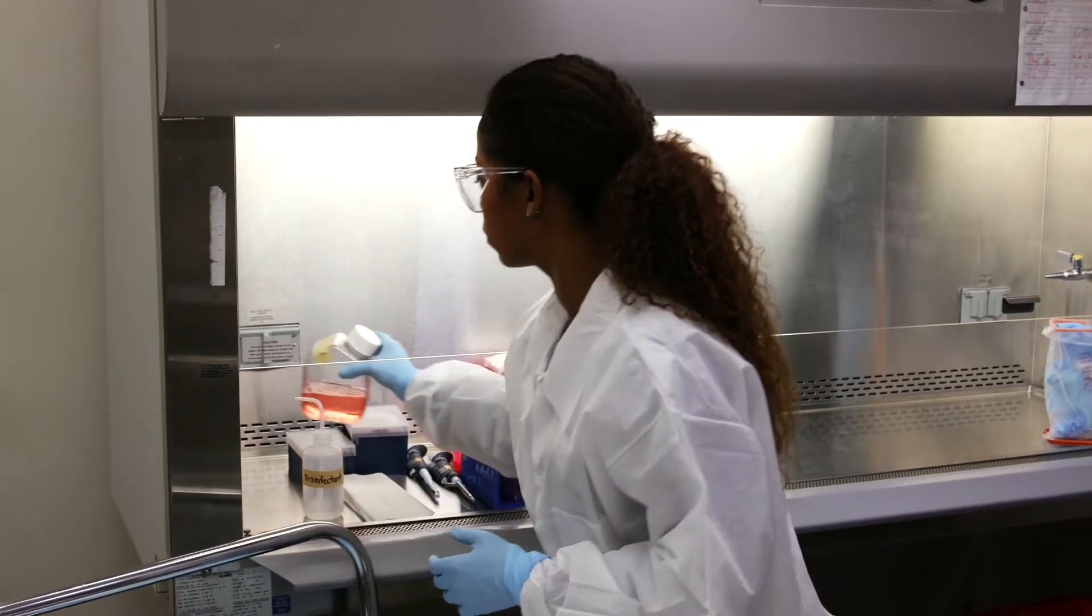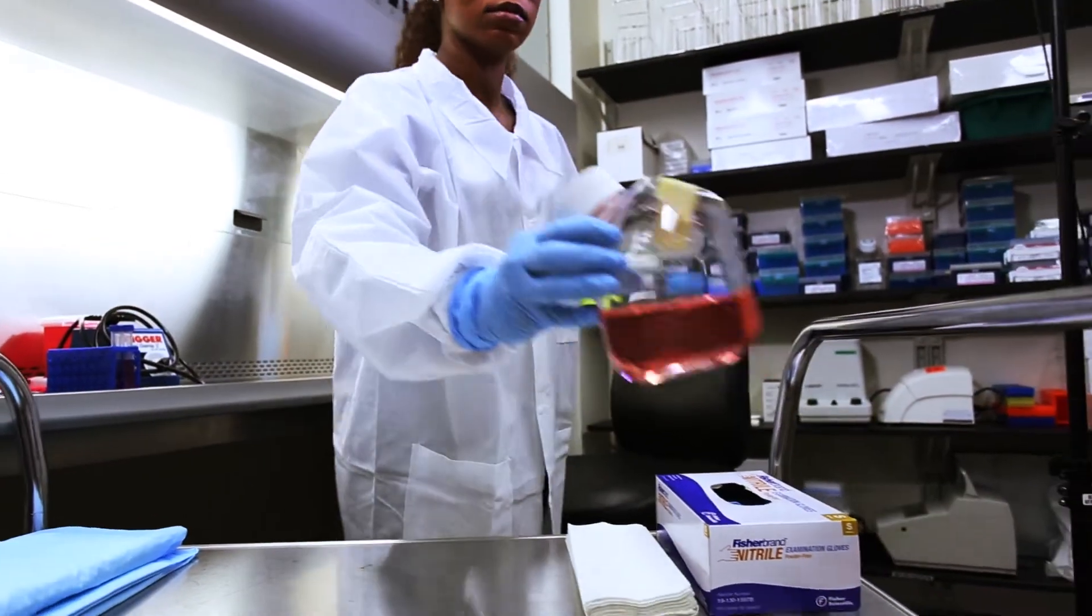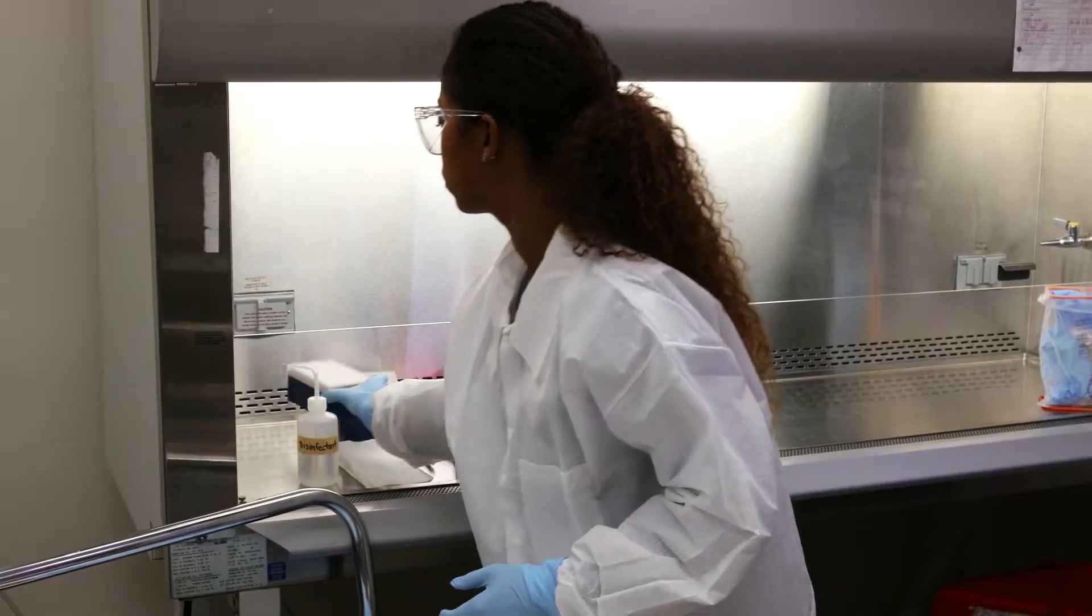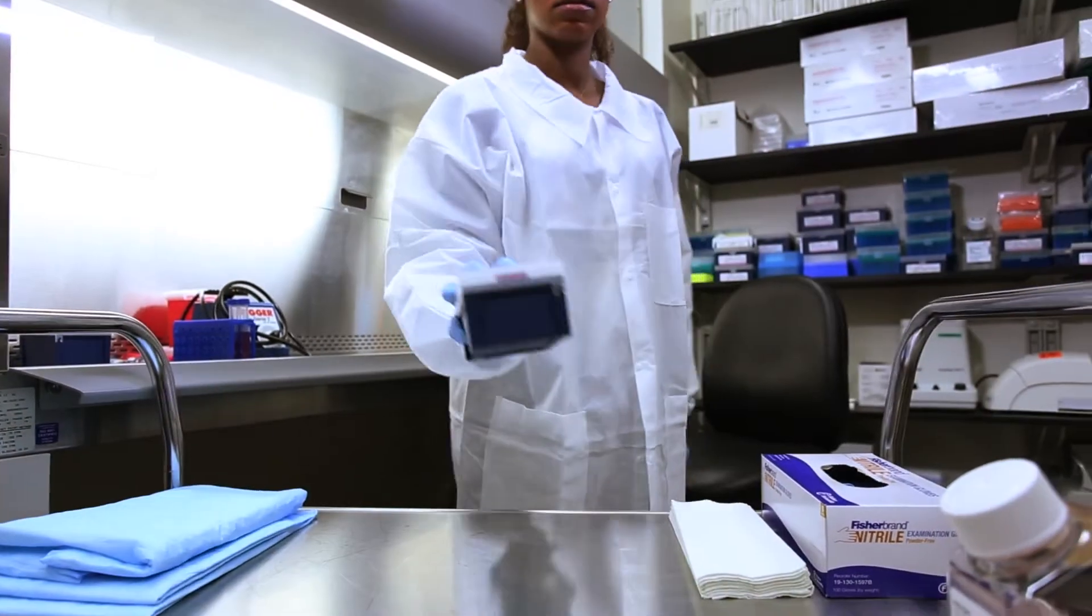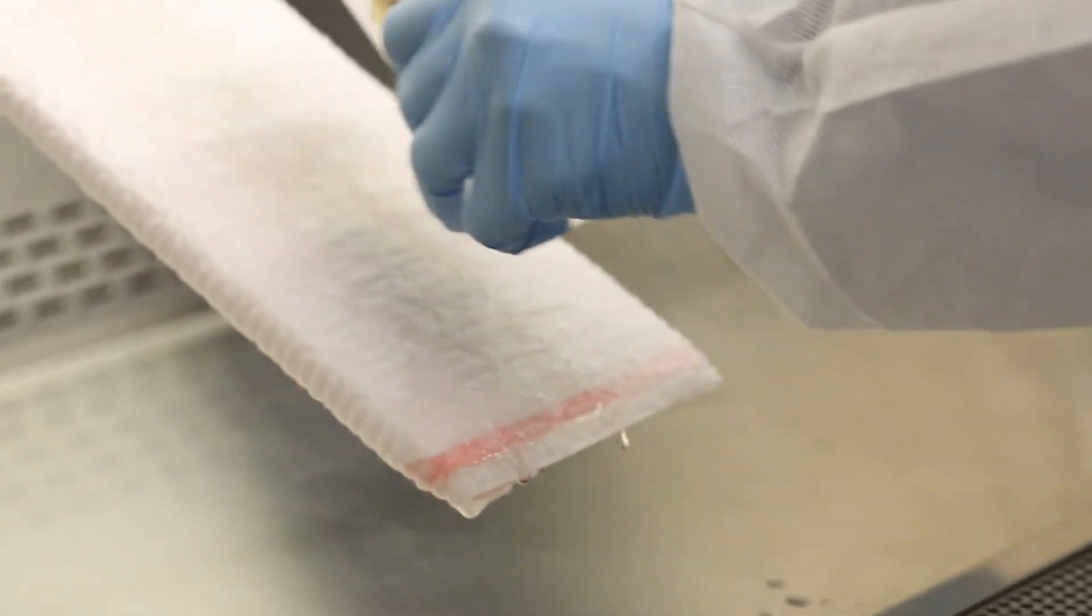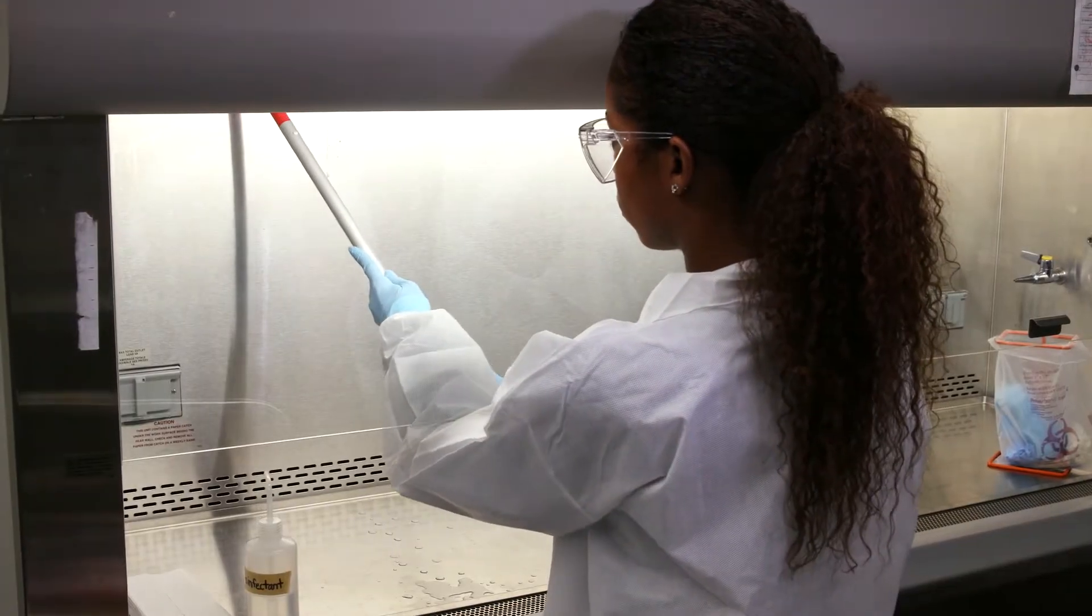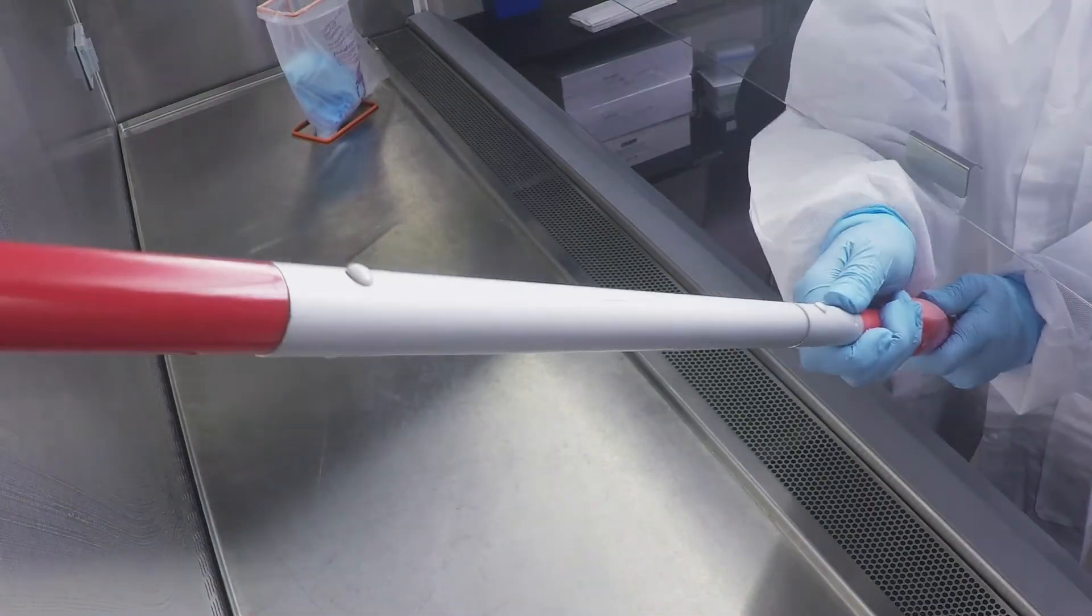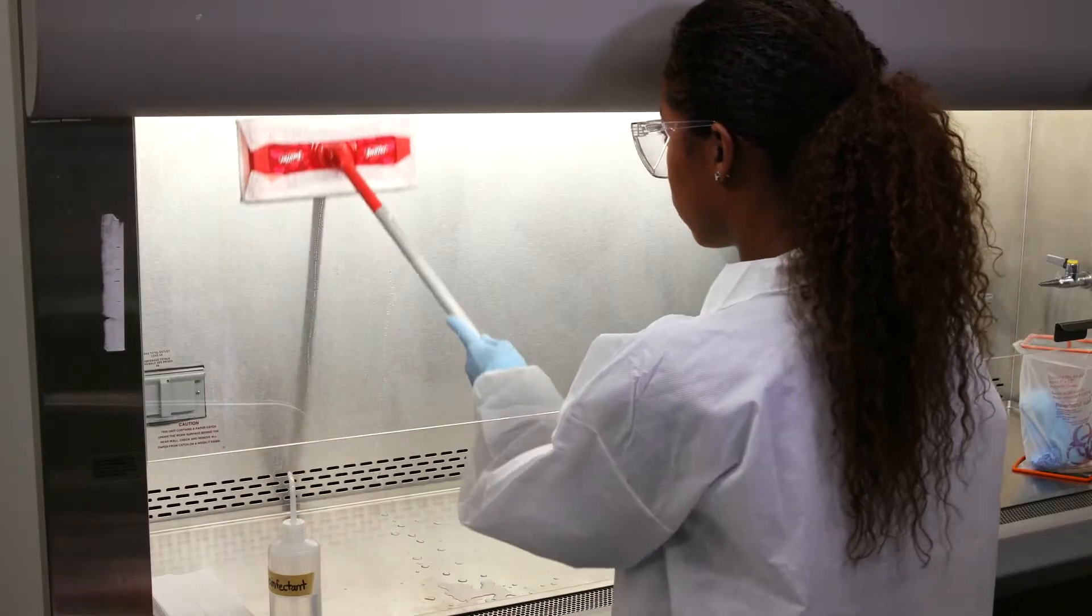Remove other materials from the BSC, placing them on your cart. After removing everything from the cabinet that needs to come out, proceed to decontaminate the inner surfaces of the BSC as you did before beginning work. Don't forget the sides and back wall as well as the inside of the glass sash.